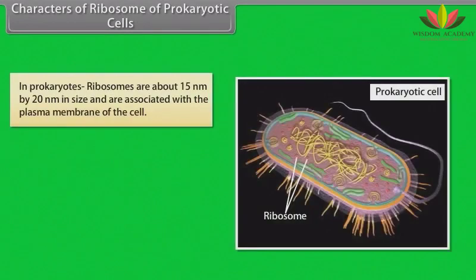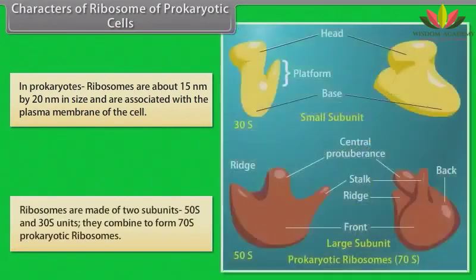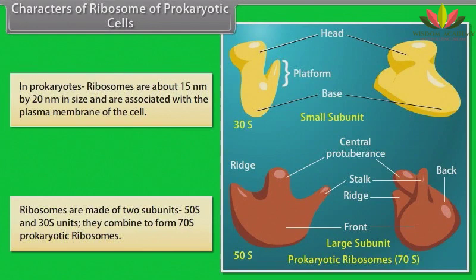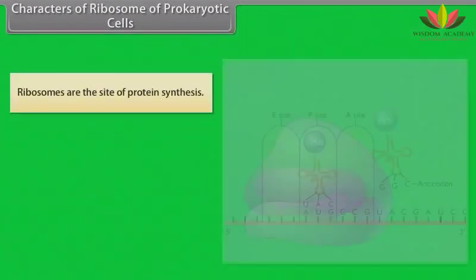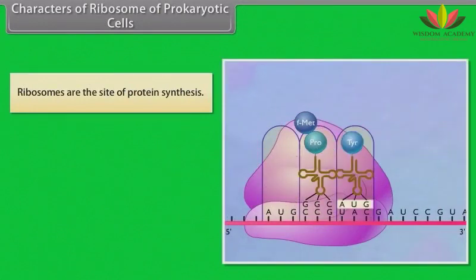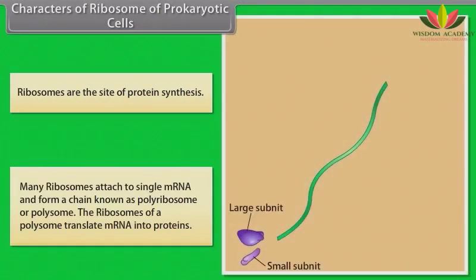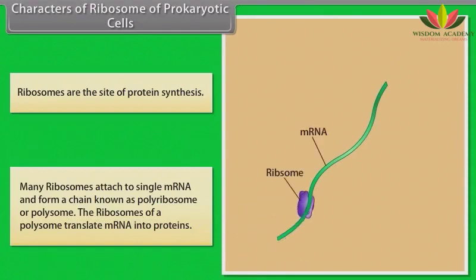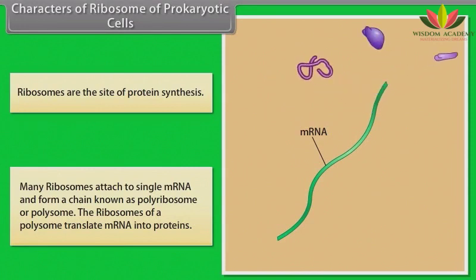In prokaryotes, ribosomes are about 15 nm by 20 nm in size and are associated with the plasma membrane of the cell. Ribosomes are made up of two subunits — 50S and 30S — which combine to form 70S prokaryotic ribosomes. Ribosomes are the site of protein synthesis. Many ribosomes attach to a single mRNA and form a chain known as polyribosome or polysome, which translates mRNA into proteins.